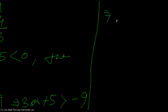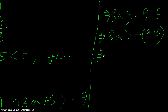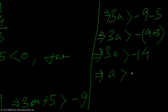So 3a plus 5 is greater than minus 9. Subtracting 5 from both sides gives 3a greater than minus 9 minus 5, which is minus 14. Dividing both sides by 3, a is greater than minus 14 by 3.